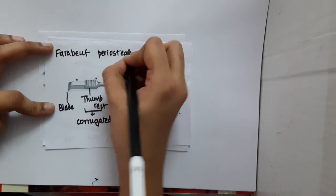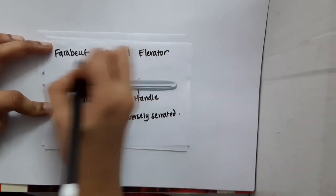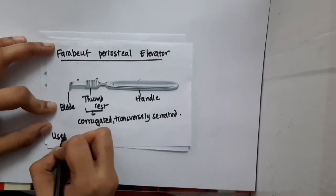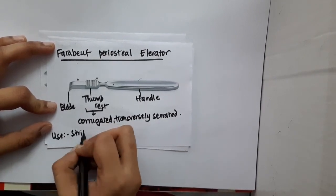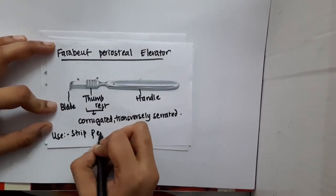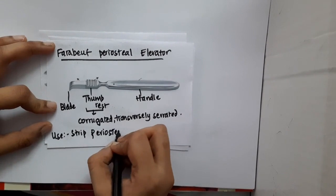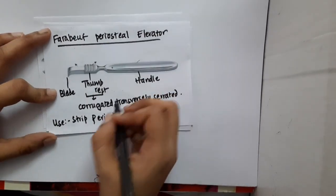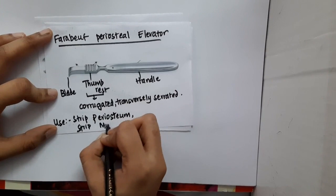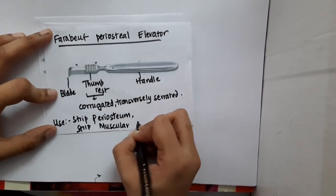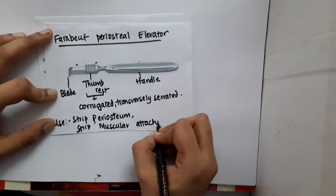Now what are the uses of this periosteal elevator? As the name says, it is used to strip the periosteum. Is it just used to strip the periosteum or any other uses? There is one more use - it is also used to strip muscular attachment.